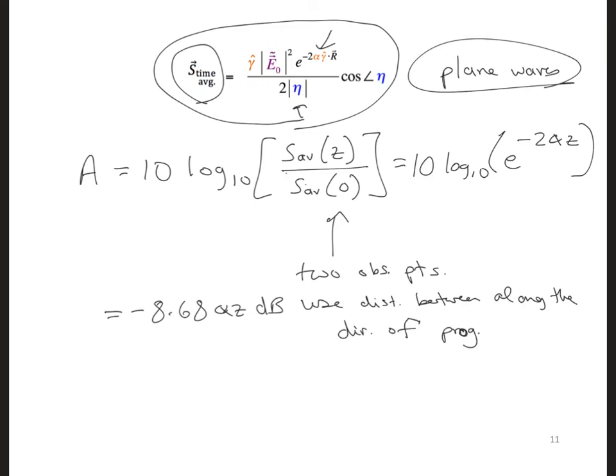But since we can quickly assume our transmitted signal is a plane wave, since our wavelength is just 19 centimeters, we can use this simplified expression showing on the top here for the time average power of a plane wave.